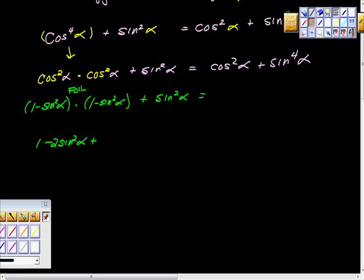Then when you multiply a negative times a negative for your last piece, you're going to get a positive and you're going to get sine to the fourth alpha. I'm praying to God that this sine to the fourth alpha is this one right here.